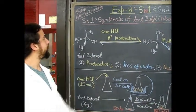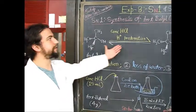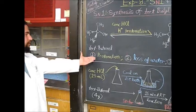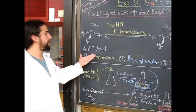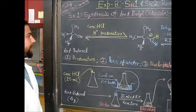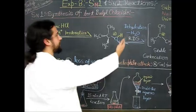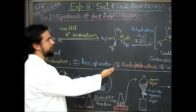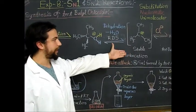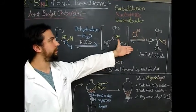Today in the SN1 portion of the experiment we are going to be performing the SN1 synthesis of tert-butyl chloride. Firstly, you're going to have tert-butanol, a tertiary alcohol that is going to undergo protonation by concentrated hydrochloric acid. Then the rate-determining step is the dehydration of water from the butanol, creating a stable tertiary carbocation, after which the chloride can attack.